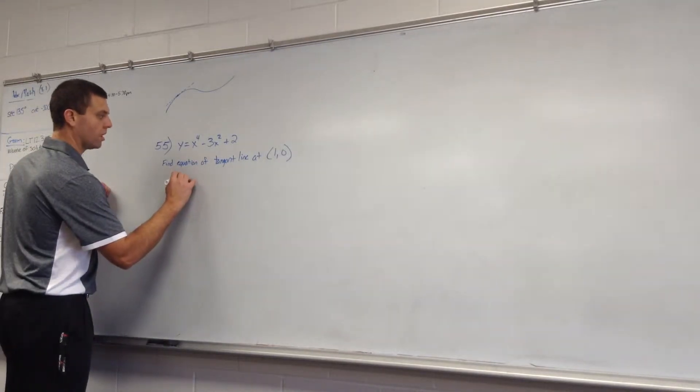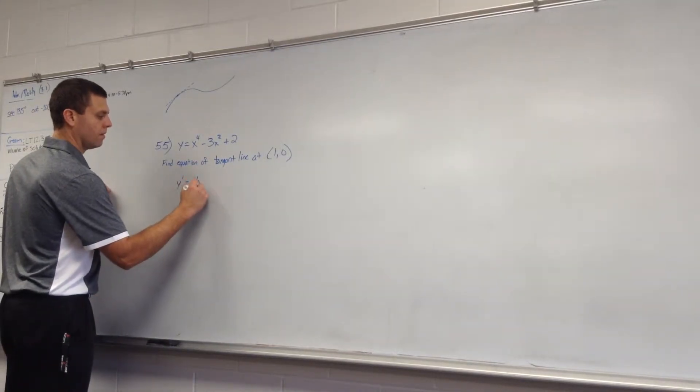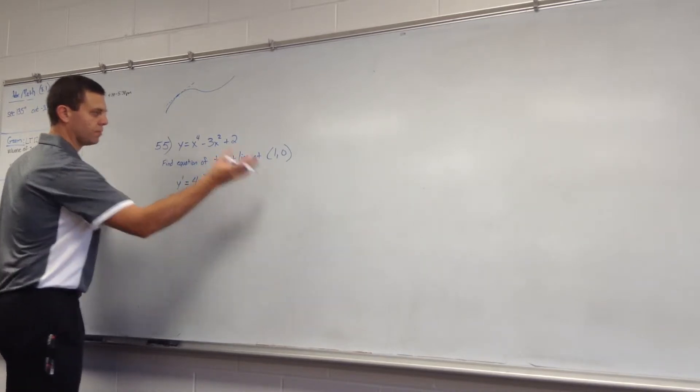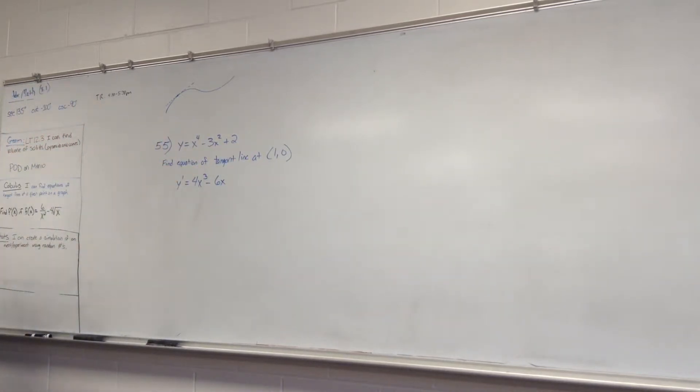So in this case, y prime, 4x cubed minus 6x plus 0. So 4x cubed minus 6x. There's your derivative.